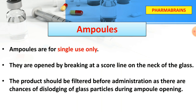Next is ampoules. When we use ampoules, we prepare them for single use only. Our glass neck has a score line — we break it and open it. When we open ampoules, there are chances that some glass particles are added to our preparation. So we have to filter it.